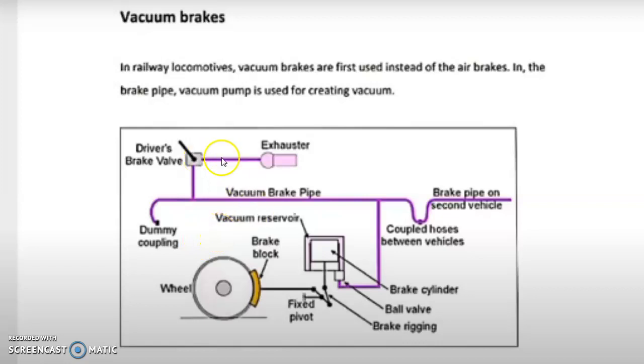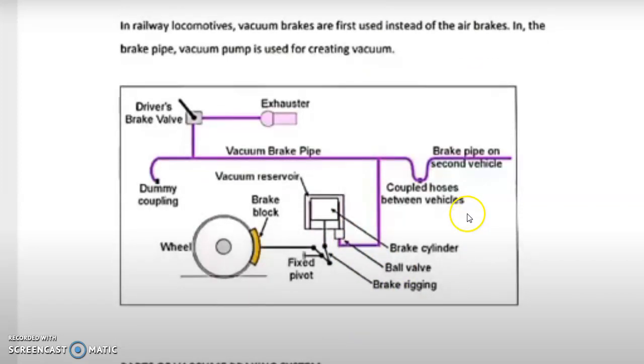As in the figure you can see, this one is your exhauster, this one is your driver brake valve, these are the interconnected vacuum brake pipes. Here we are having a vacuum reservoir where the vacuum has been created. This is your brake cylinder, this one is your ball valve, here is the brake rigging, and these are coupled to another buggy.